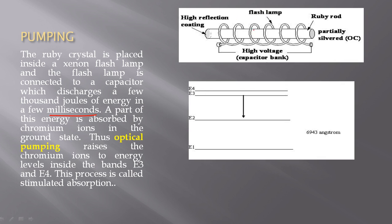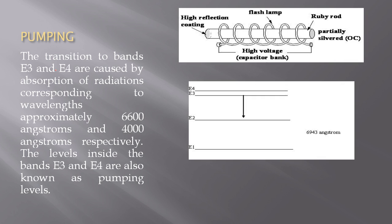We use a flash lamp to excite the chromium ions from the ground level to the upper level. A part of this energy is absorbed by chromium ions in the ground state. Optical pumping raises the chromium ions to energy levels inside the bands E3 and E4. This process is called stimulated absorption. The transitions to bands E3 and E4 are caused by absorption of radiation corresponding to wavelengths approximately 6600 angstroms and 4000 angstroms.